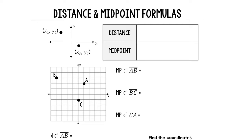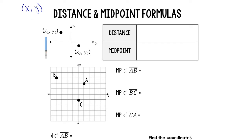First, we need to remember that when we plot points, everything goes in alphabetical order. We plot a coordinate point as X and then Y. To use the distance and midpoint formulas, we're going to need two different coordinate points, and we'll label them X1, Y1, X2, Y2. It's going to feel a little bit like we're going to find slope, but it's just a smidge different.